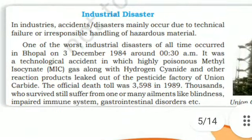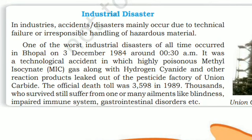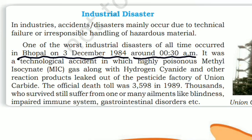Industrial disasters: In industries, accidents and disasters mainly occur due to technical failure or irresponsible handling of hazardous material. One of the first industrial disasters of all time occurred in Bhopal on 3 December 1984, around 12:30. It was a technical accident in which highly poisonous methyl isocyanate gas along with hydrogen cyanide and other reaction products leaked out of the pesticide factory of Union Carbide. The official death toll was 3,598. In 1989, thousands who survived still suffered from ailments like blindness, impaired immune system, and gastrointestinal disorders.